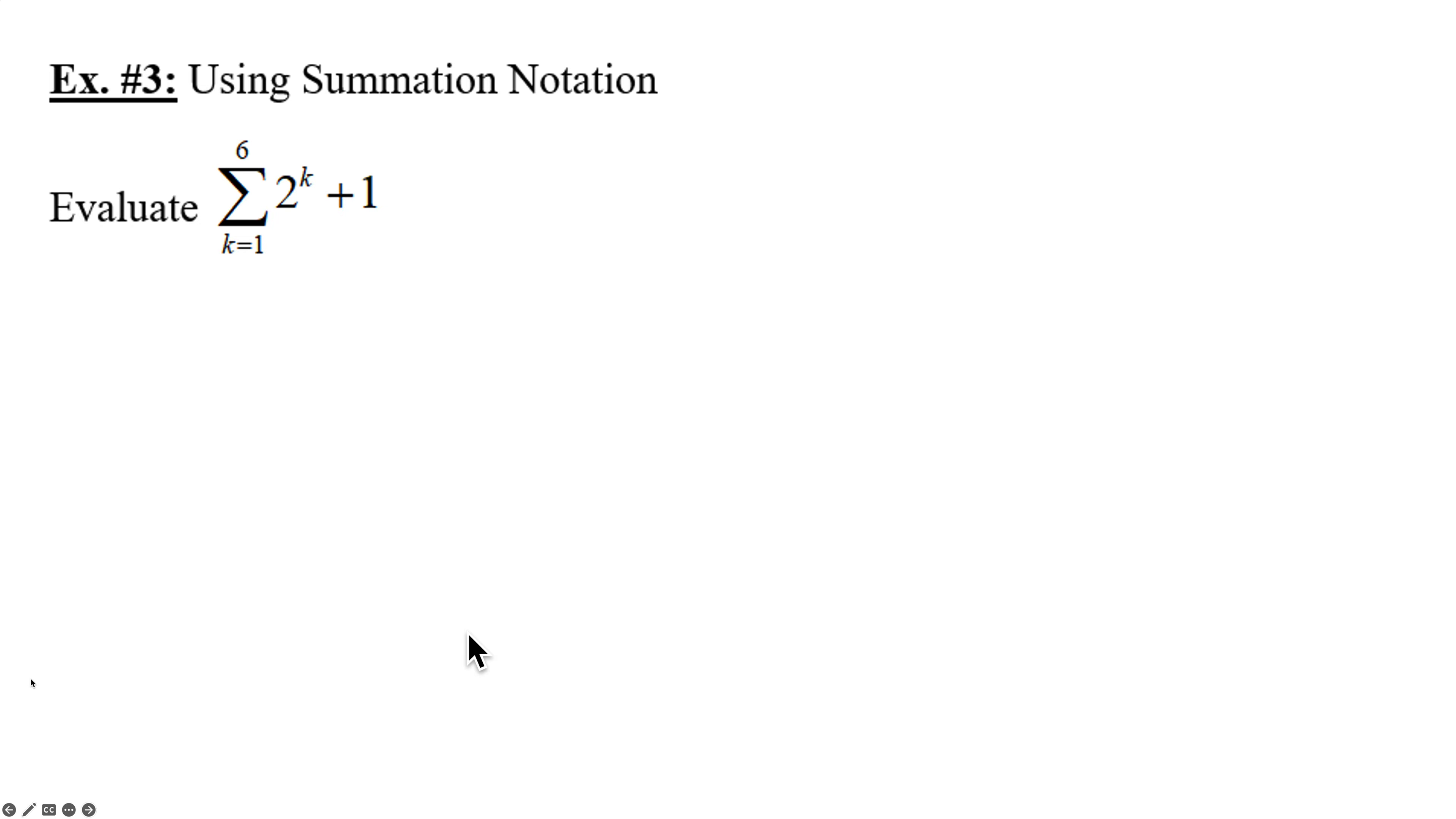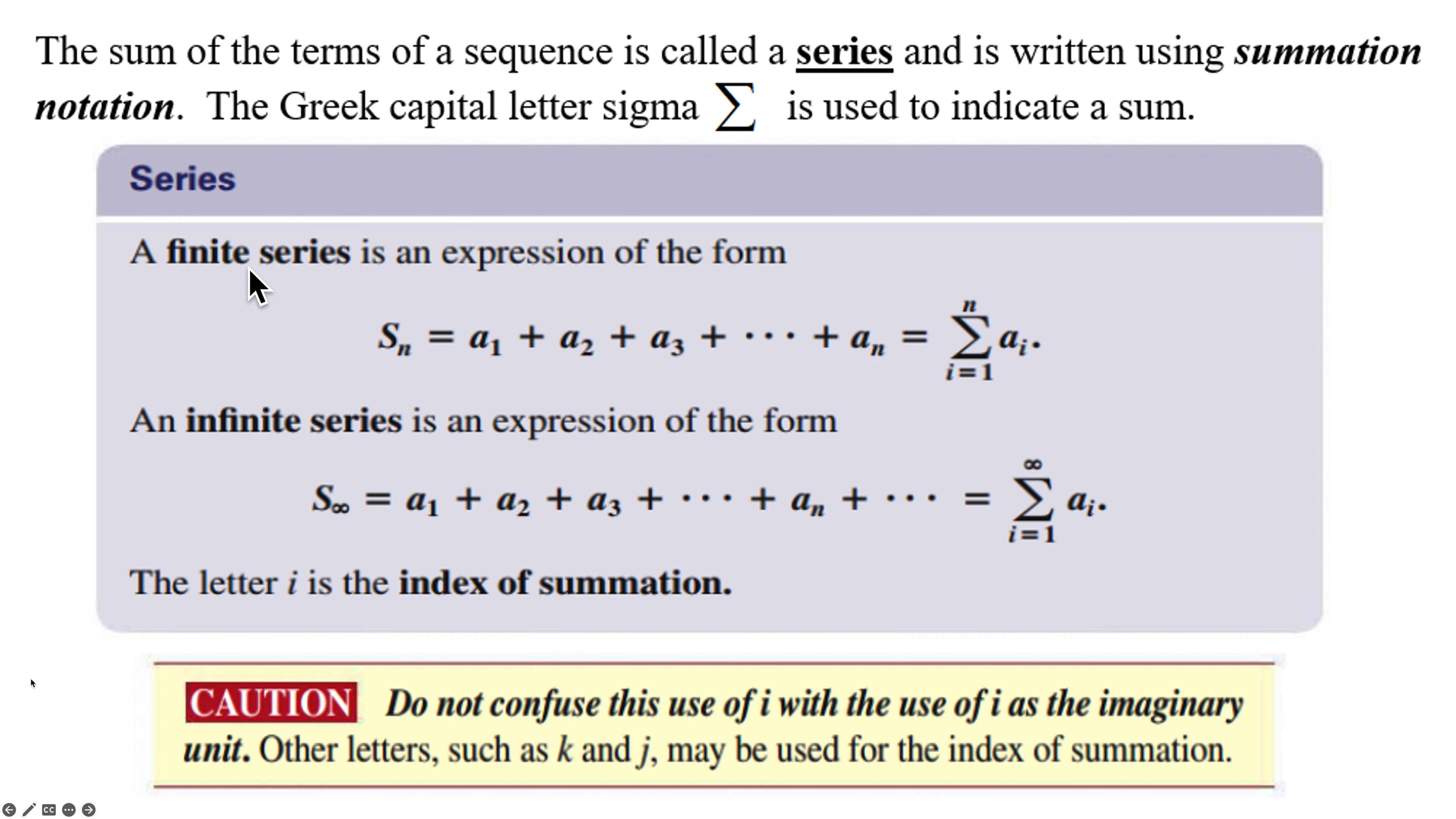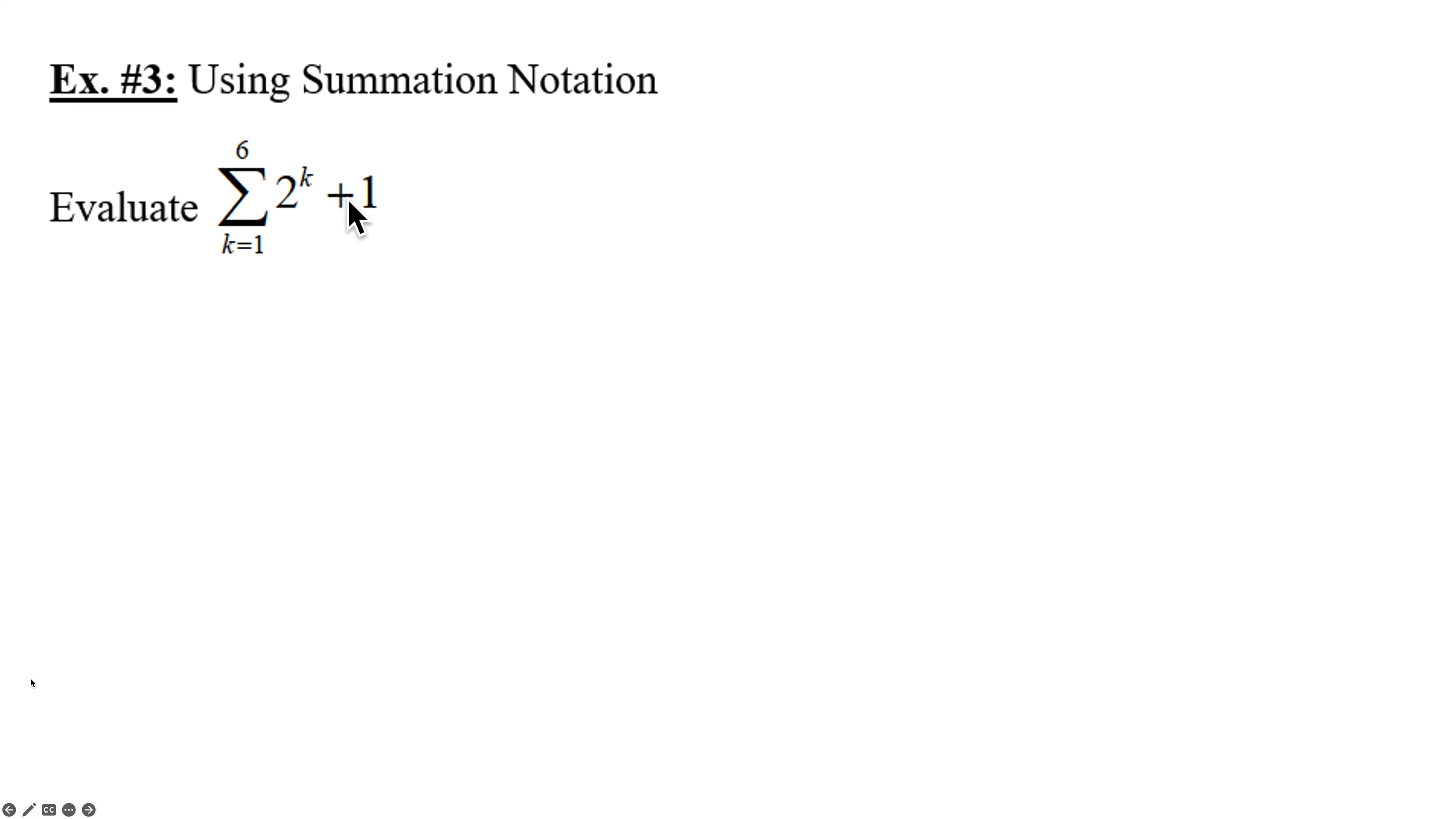Example time. Evaluate this summation. We're going from 1 to 6 of 2^k + 1. So this whole thing right here is a term. So when k is equal to 1, we're going to write it in parentheses, 2 to the first plus 1. Now if you want to crunch that out, that's 2 to the first is 2 plus 1. You can put a 3 underneath it. So I'm going to write out each individual term and calculate it out as we go. When k is 2, now my term is 2 squared plus 1 in parentheses. 2 squared is 4 plus 1. I'm going to add a 5.